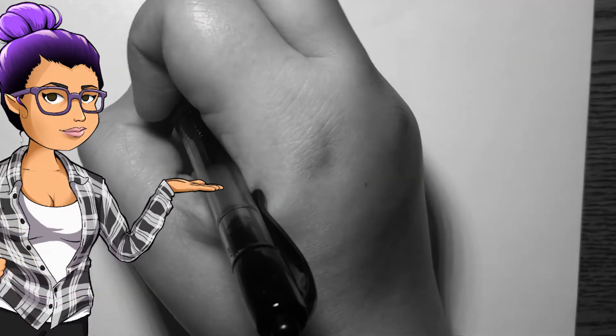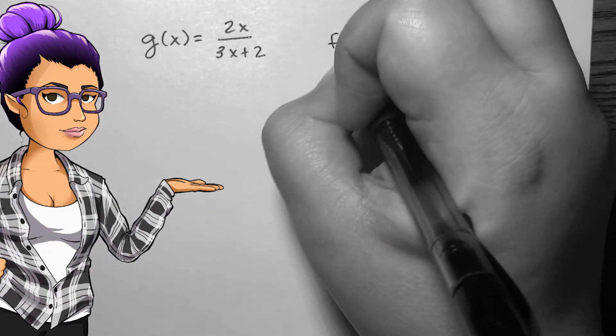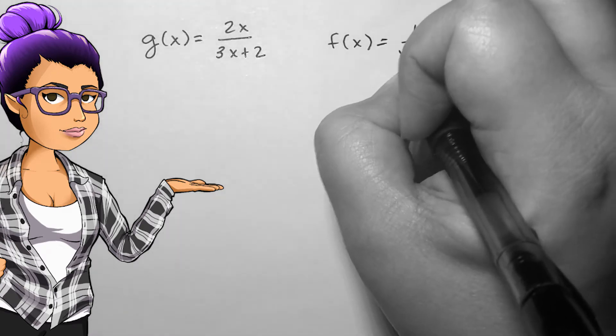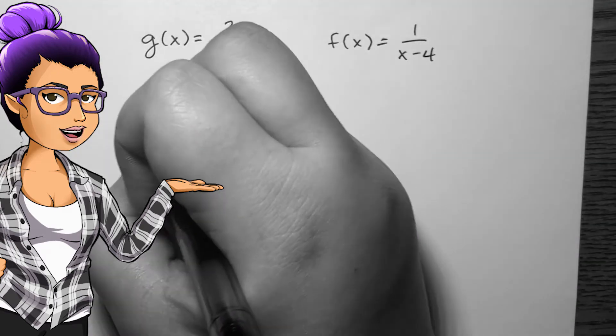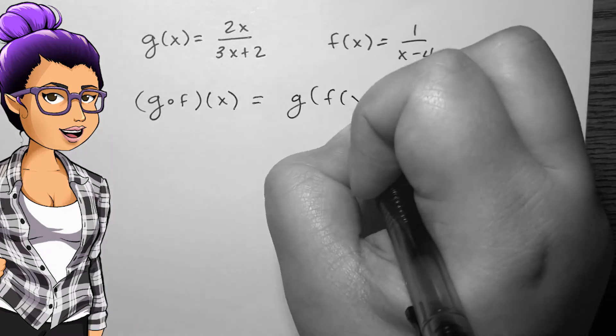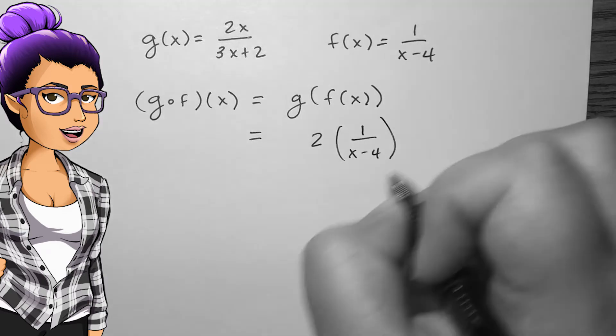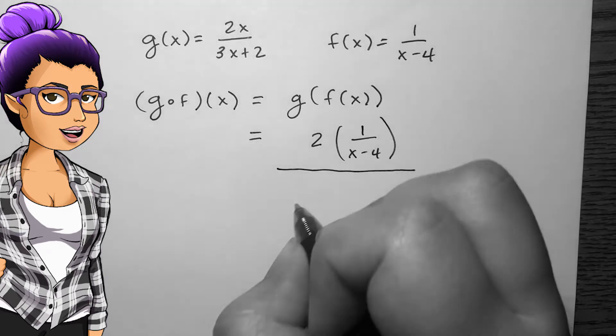To find the domain of a composition of two functions, the domain will be where the simplified composition domain and the domain of the inside function overlap. We consider the simplified composition because this is the final construction of the function, and we consider the inside function since an ingredient not fitting into the first machine won't be able to create an item to be an ingredient for the second machine.